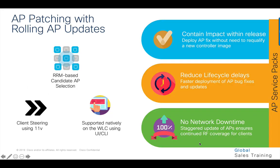This also expedites the fix going into the network as well as contains the impact to an already released code on the controller. Cisco 9800 supports rolling out critical AP bug fixes using what's called an AP Service Pack.